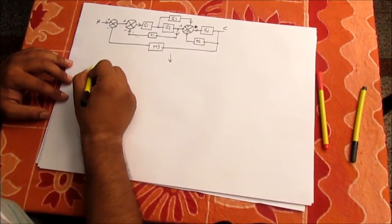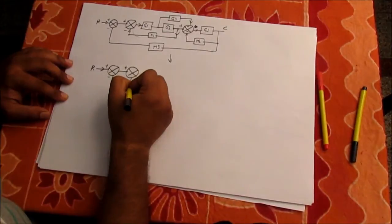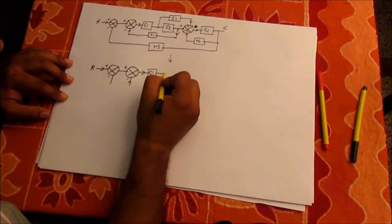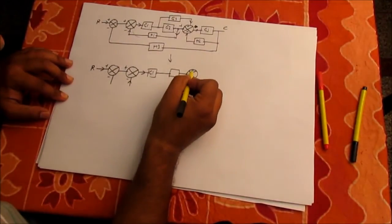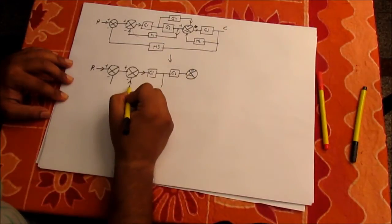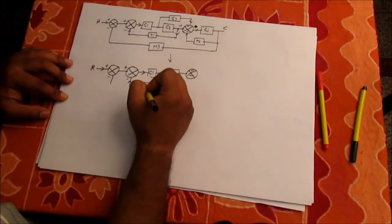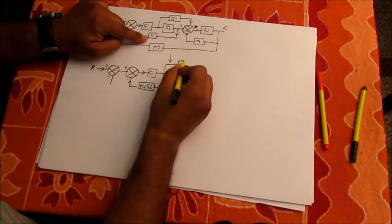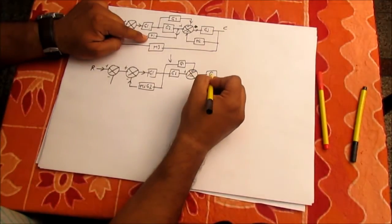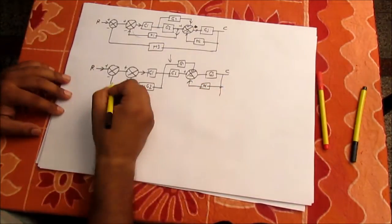Now I will redraw the diagram. I have R here, then a summing junction with plus and minus, then G1. The takeoff point is now shifted, and H1 becomes H1/G2. G4 is now in parallel to this part of the system with a plus sign. I have G3 here, this is C, and this is H2. This feedback gain is H3.